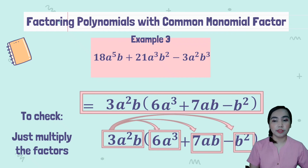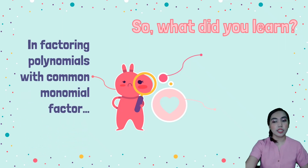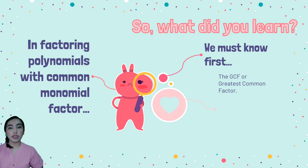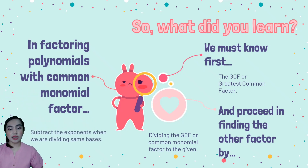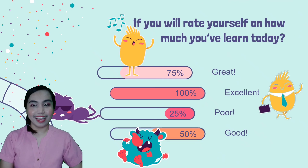So what did you learn? In factoring polynomials with common monomial factor, we must know first the GCF or the greatest common factor — yun dapat keep in mind. And proceed with finding the other factor by dividing the GCF or common monomial factor into the given. And then lastly, subtract the exponents when we are dividing the same bases. And that's it!